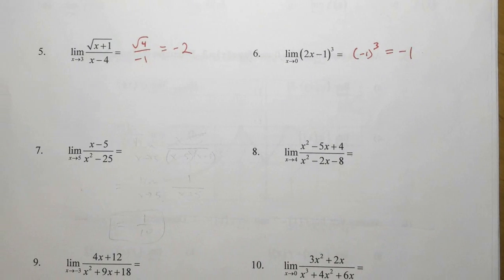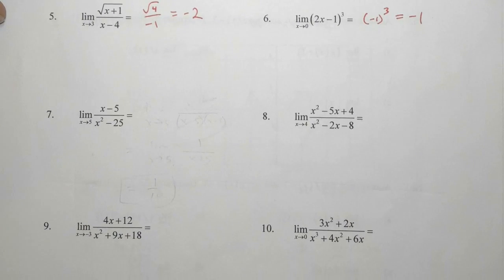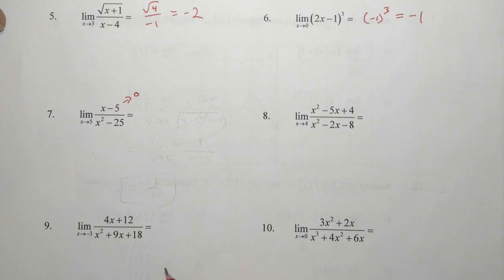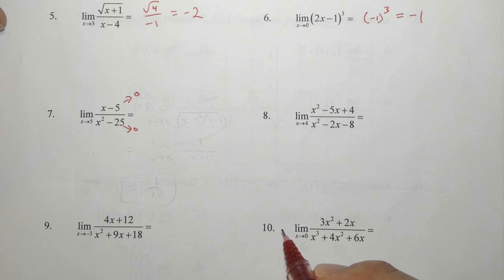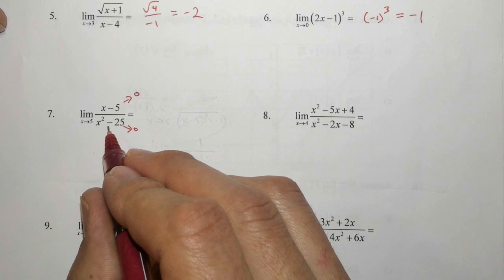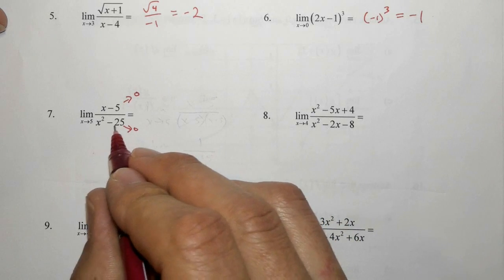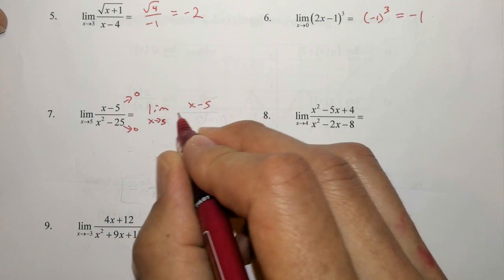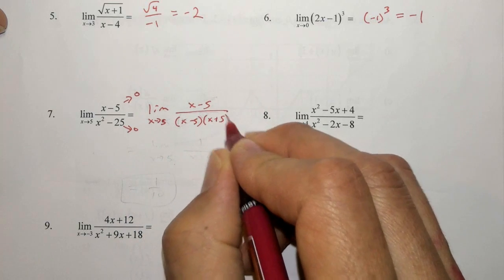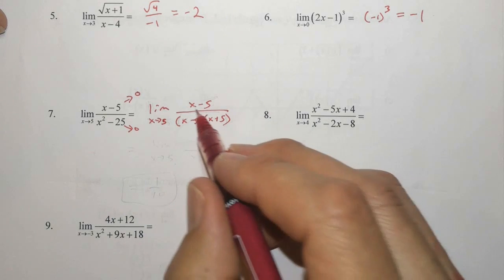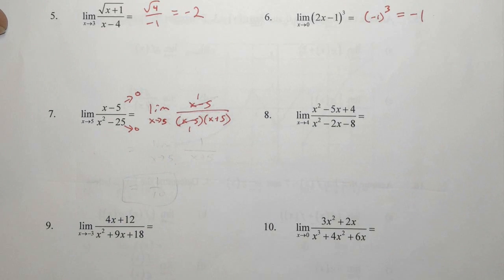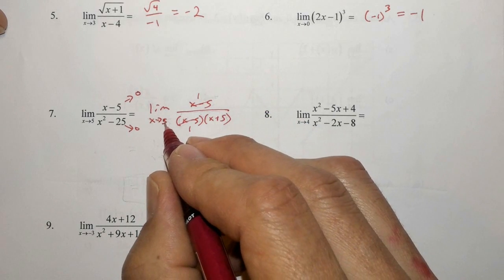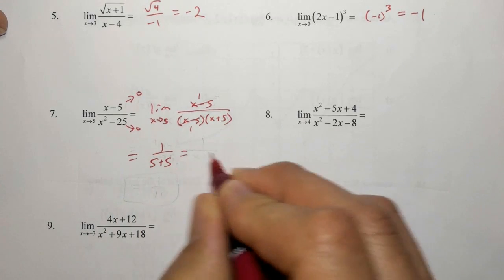With number seven, we have our first situation where the numerator heads to zero when we replace x with five, and so does the denominator. So we need to simplify. The denominator is the difference of two squares, so this equals the limit as x approaches five of x minus five over x minus five times x plus five. We can eliminate the x minus fives, leaving us with one over x plus five. When we replace x with five, we have one over five plus five, or one-tenth.